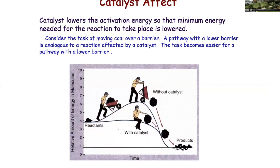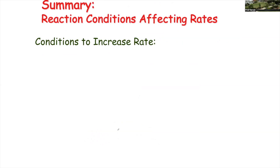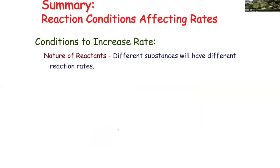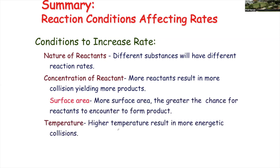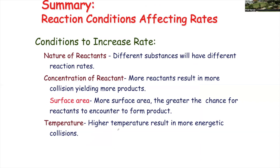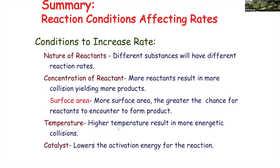Here's the example of a catalyst. A catalyst allows you to take a different path that has a lower activation energy. These are the things you need to worry about in terms of kinetics. Pay attention to the exercises we did because you'll see a bunch of questions like that in kinetics.